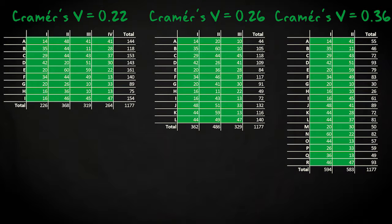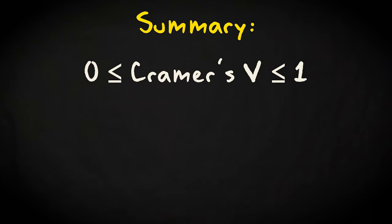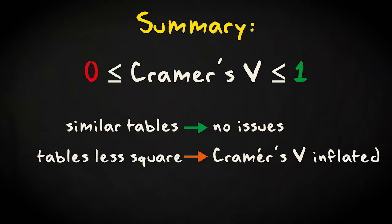So in summary, you have to take care with interpreting Cramer's V. Values of 0 and 1 are clear and furthermore there is no issue if you are comparing tables of the same dimension. However, the larger the difference between the number of rows and columns, the larger the value for Cramer's V becomes even when there is no association.